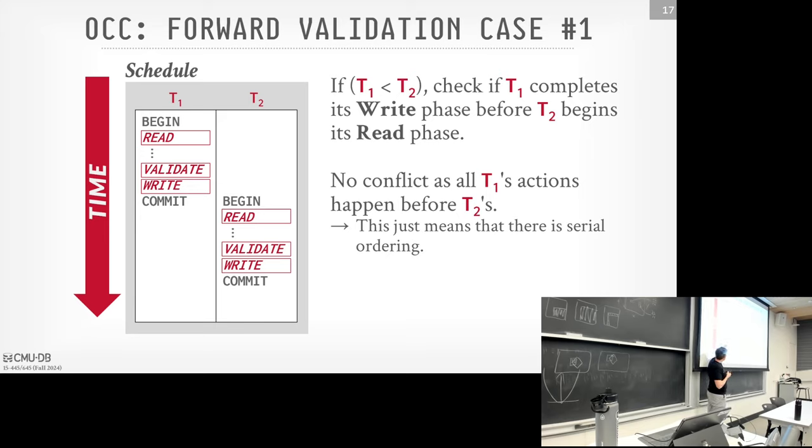This problem is called a phantom read. The idea is that if you scan a range of values in a table multiple times within your transaction, and in between one scan and another a different transaction inserts or deletes an object, then you end up with inconsistent results. It's called a phantom to think of like a ghost or apparition — data magically appearing and disappearing in a way you shouldn't see under true serial ordering.